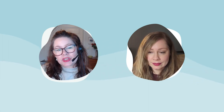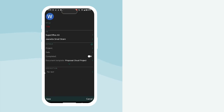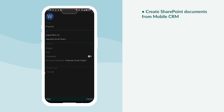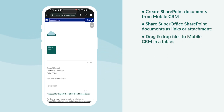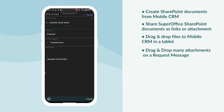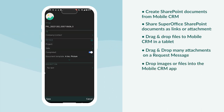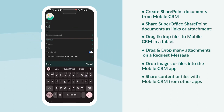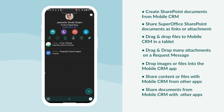Moving on, there's also something new with the SharePoint integration and our mobile CRM app. If you're using SharePoint as your document archive, there are some new features in the mobile CRM app worth noting. Specifically, you can now create your SharePoint documents from mobile CRM, share your SuperOffice SharePoint documents as links or attachments in emails, and if you have a tablet, you can drag and drop files to mobile CRM. When working with requests, you can drag and drop many attachments in a message, or drag and drop to the request screen and a message will be automatically created. You can also drop images and files to mobile CRM, share content and files with mobile CRM from other apps, and share documents from mobile CRM with other apps. This experience is best with the Microsoft 365 apps installed on your mobile phone.